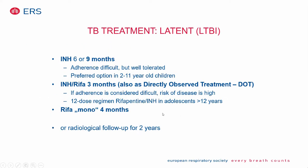If latent tuberculosis is diagnosed — immune response positive, no clinical signs — you can use isoniazid monotherapy, though adherence is difficult, or combined INH plus rifampicin, which can also be given as directly observed treatment. A 12-dose weekly observed regimen is available for adolescents older than 12 years. Rifampicin monotherapy for four months is an alternative if INH is not well tolerated. The most feasible regimen must be decided per center.